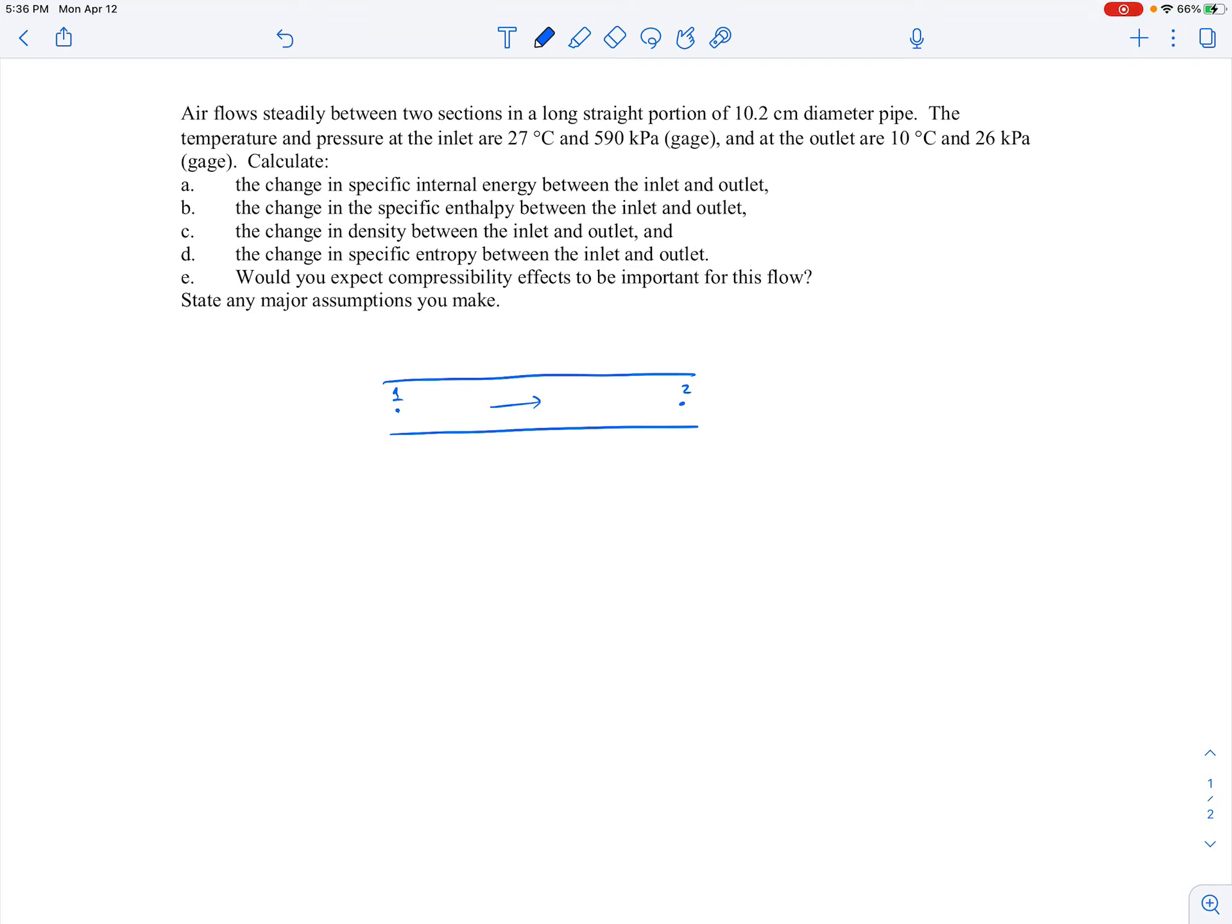We're told the temperature and pressure at the inlet are given, so this is 27 degrees Celsius and the pressure there is 590 kilopascals absolute. And the outlet temperature is 10 degrees C, and the outlet pressure is 26 kilopascals absolute.